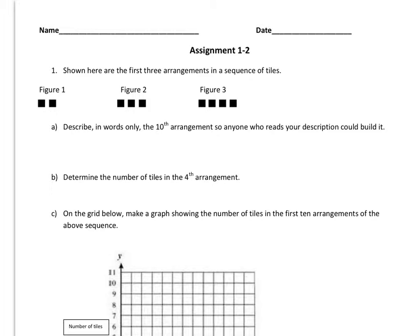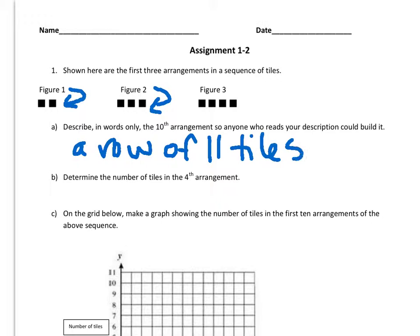Well, when I look at this, I see that figure one has two, and figure two has three. So it's one more than the figure number. So the tenth arrangement would be a row of eleven tiles.